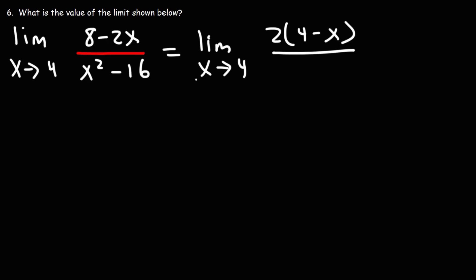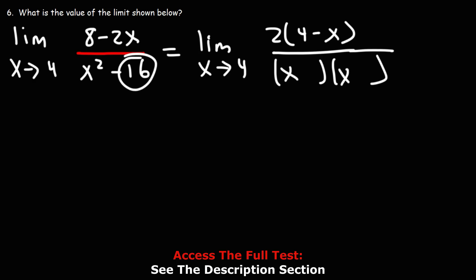In the denominator we have a difference of two squares. To factor it, we take the square root of x squared, which is x, and the square root of 16, which is four. One of them will be plus, the other will be minus.